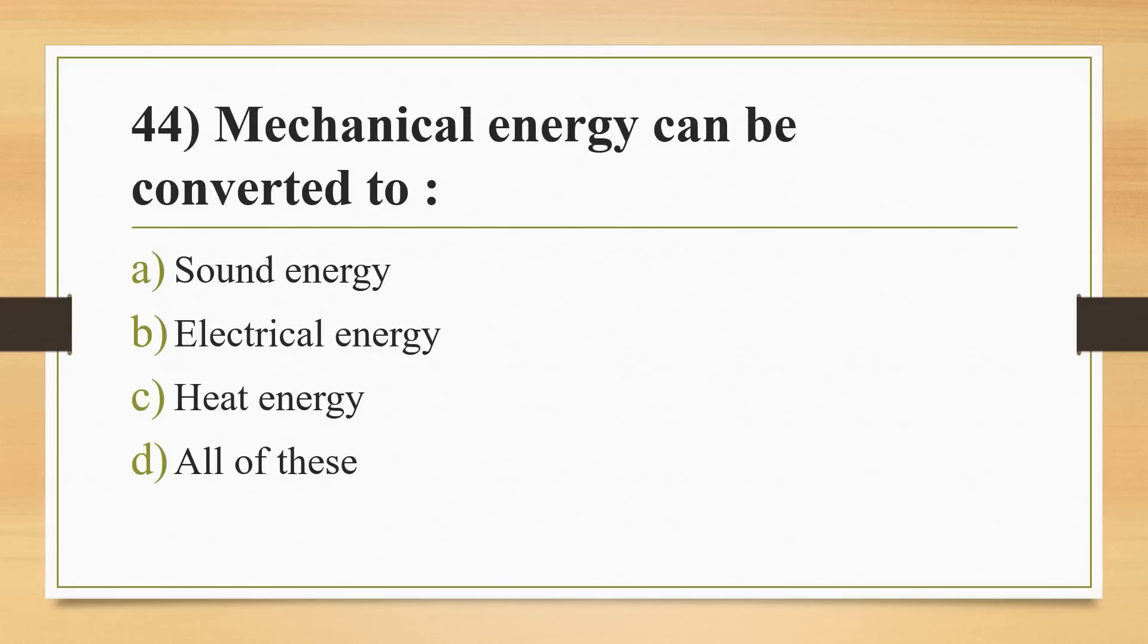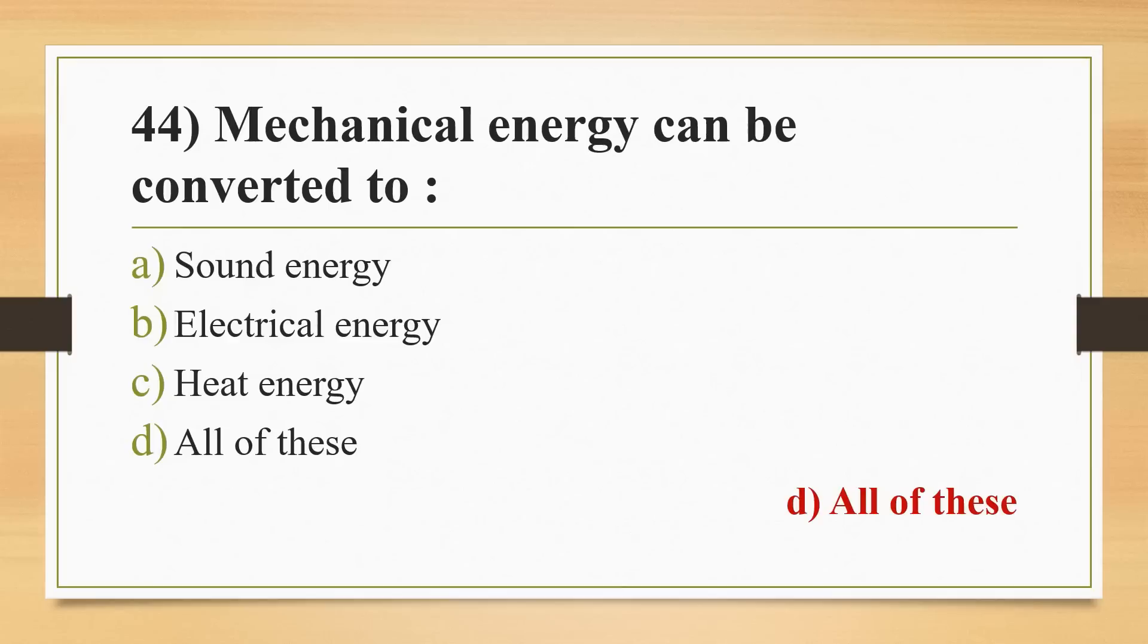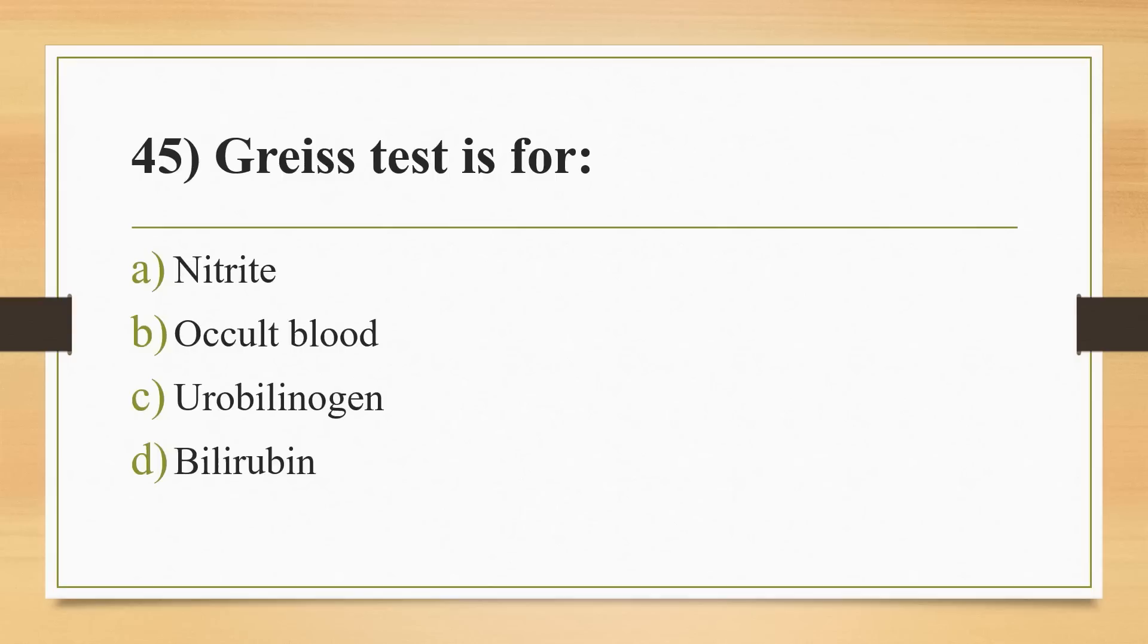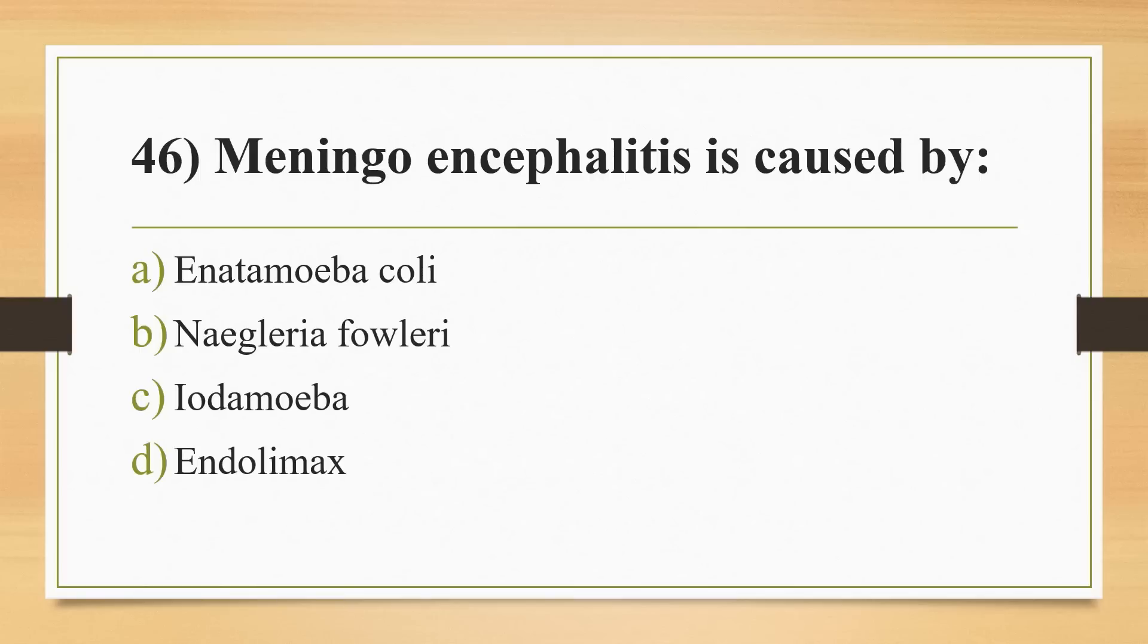Question 44: mechanical energy can be converted to? Options: sound energy, electrical energy, heat energy, or all of these. Answer is Option D, all of these. Question 45: Griess test is used for? Options: nitrite, occult blood, urobilinogen, or bilirubin. Answer is Option A, nitrite.